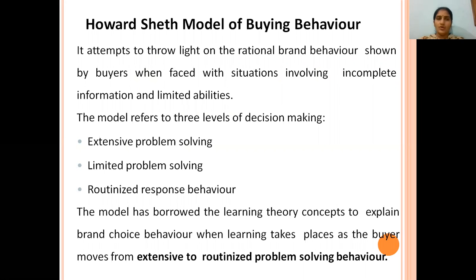The Howard-Sheth model of buying behaviour attempts to throw light on the rational brand behaviour shown by buyers when faced with situations involving incomplete information and limited abilities. This model explains how rational brand behaviour prevails in the market and how buyers face situations where incomplete information and limited abilities are present.